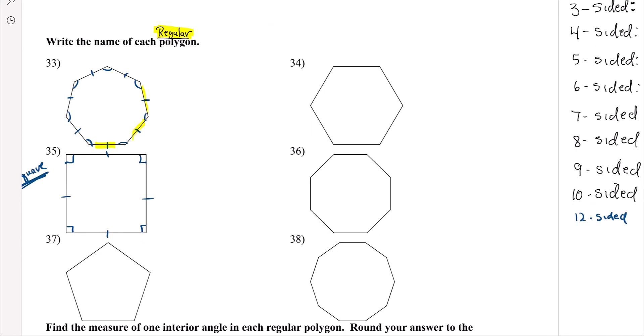So, one, two, three, four, five, six, seven. So, this would be a heptagon.